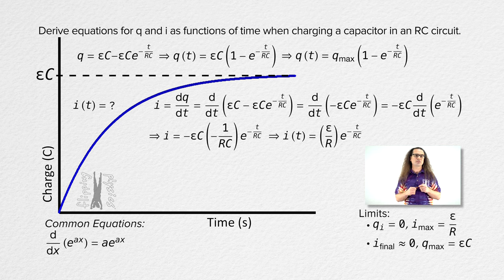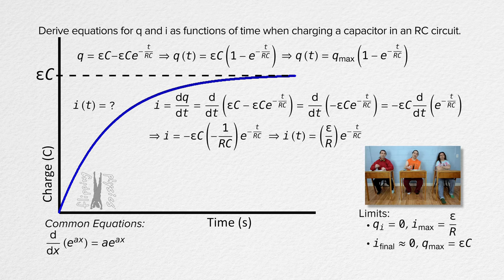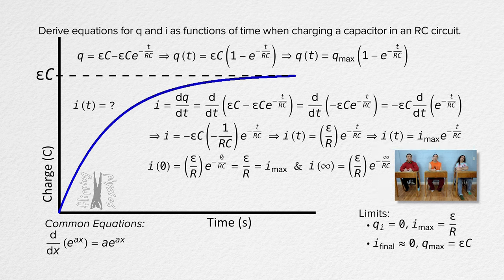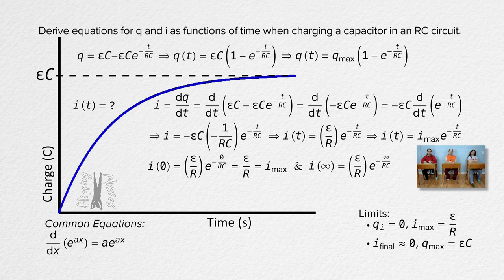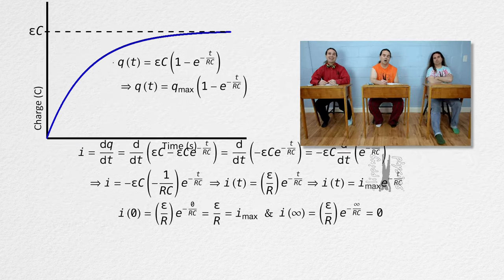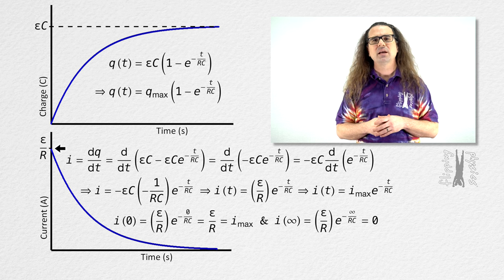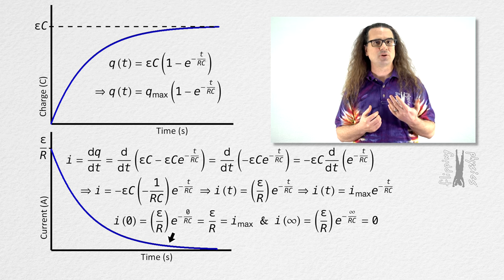For the initial current, substituting zero in for time gives e to the negative zero which equals one, so the initial current equals EMF divided by resistance — the maximum current. We can substitute current maximum into the equation for current as a function of time. After a long time, substituting infinity gives e to the negative infinity which equals zero, so the current in the RC circuit is zero. This is the graph: the initial current is at its maximum value of EMF over resistance, and the current decreases according to the equation and asymptotes at zero.